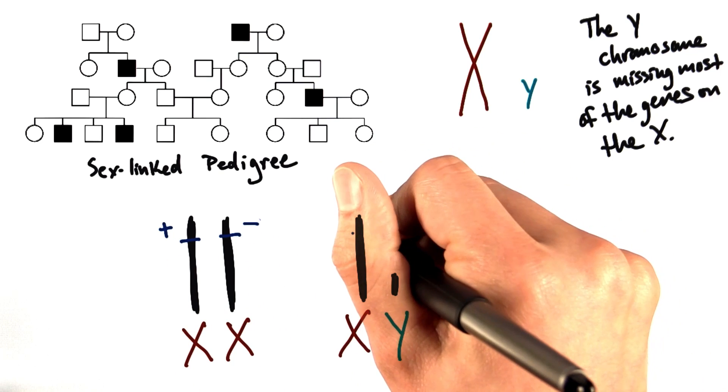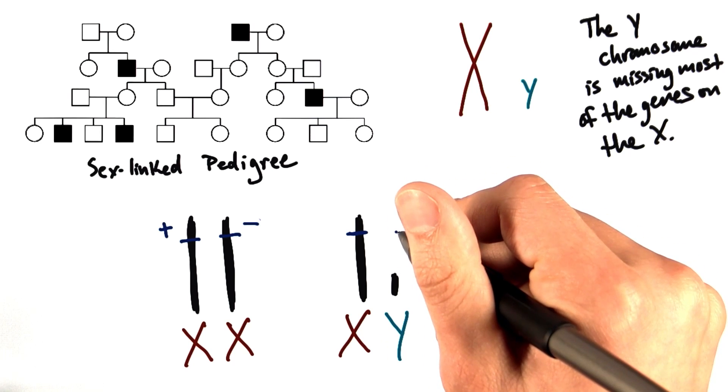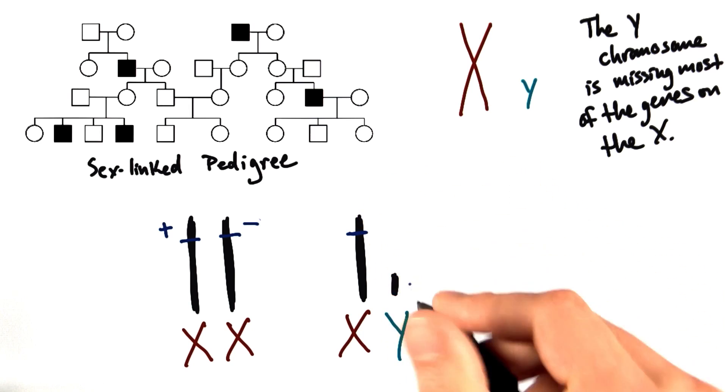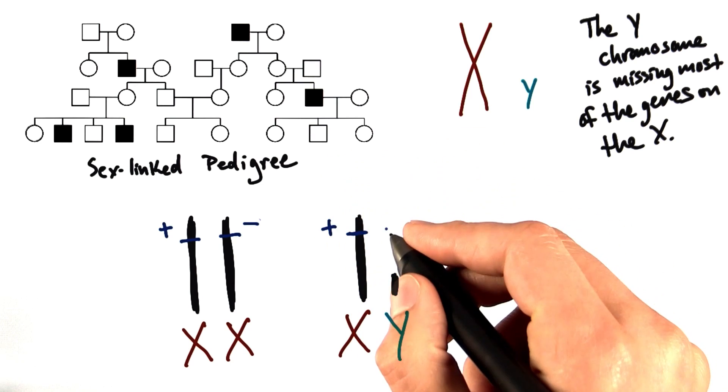But males, sure, they have one X chromosome. The Y chromosome is missing the piece of information that would correlate to the same region on the X chromosome. They don't have this gene. So if the male has the dominant copy, great.